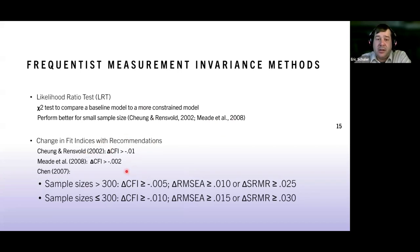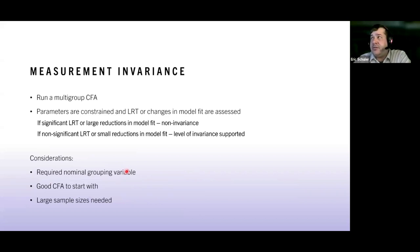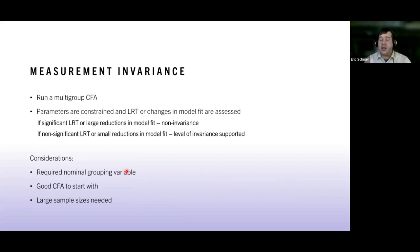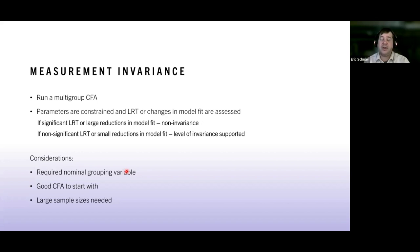The steps: run a multi-group CFA, constraining parameters of interest to be equal across groups at each step — typically two groups, though it can be done with more. Compare models and see where misfits occur. A significant likelihood ratio test or large reductions in model fit indicate non-invariance, meaning the measure is functioning differently across groups. Non-significant results or small reductions indicate that level of invariance is supported and the scale is performing equally.